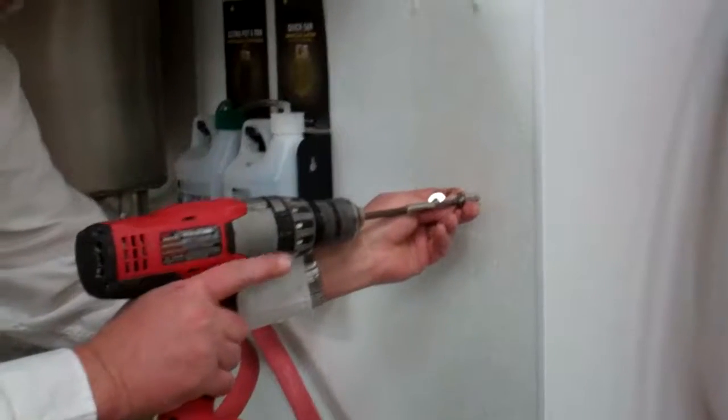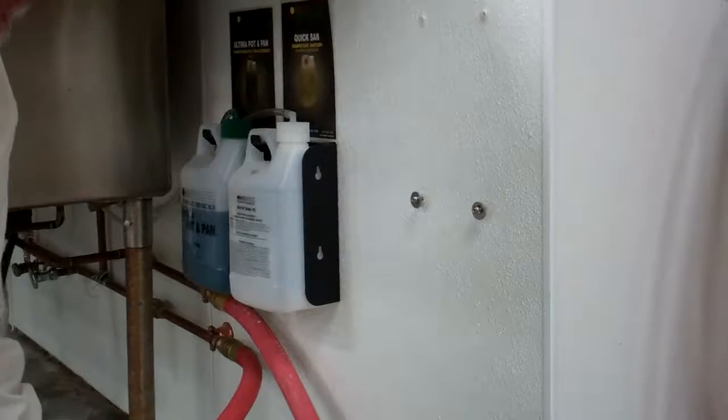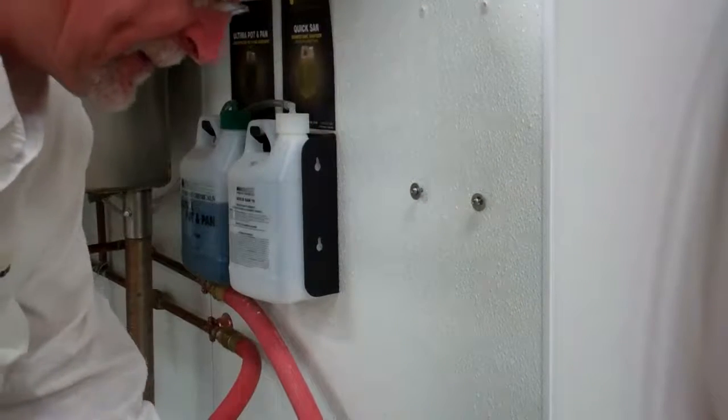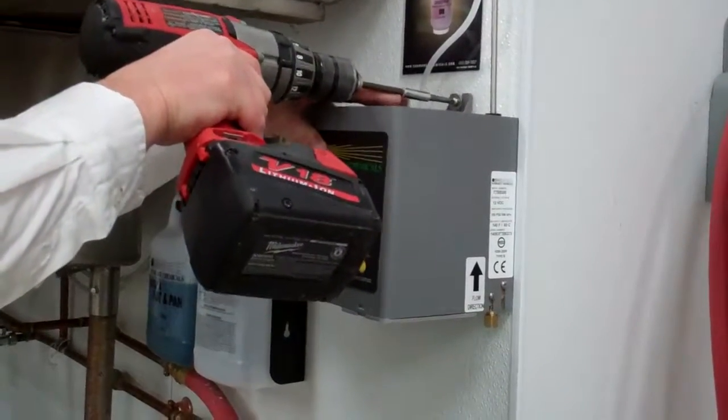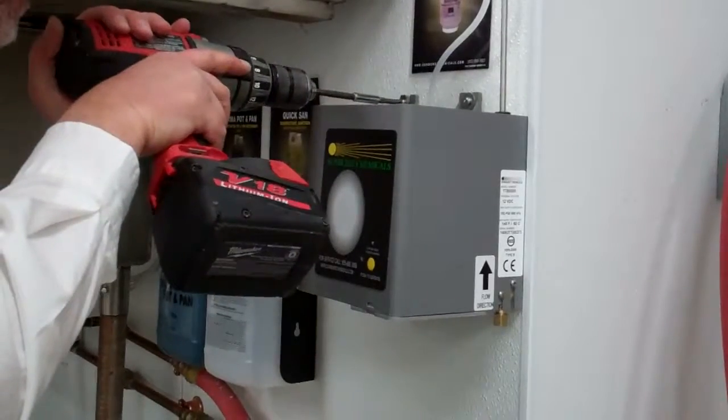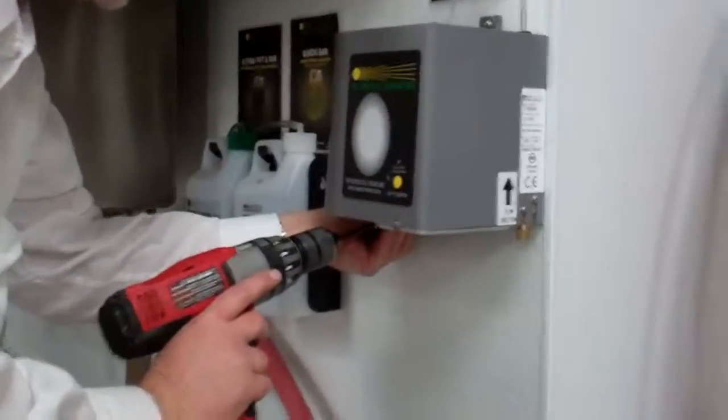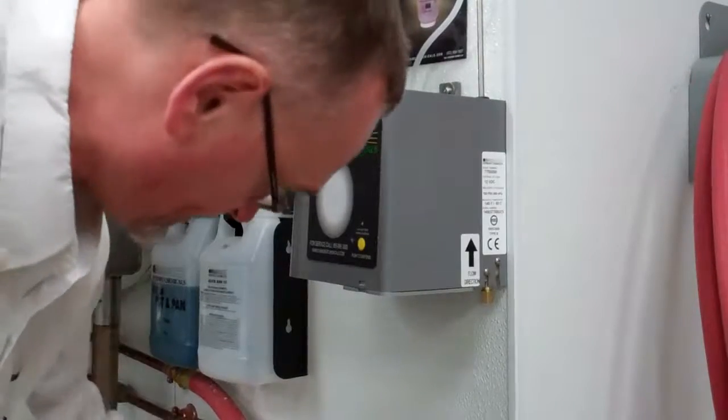And we'll go over and put it on the wall. Ready to put the dispenser on the wall. The easiest way is to put the two bottom screws in. Put the dispenser in place and add our top screws. And connect our water source.